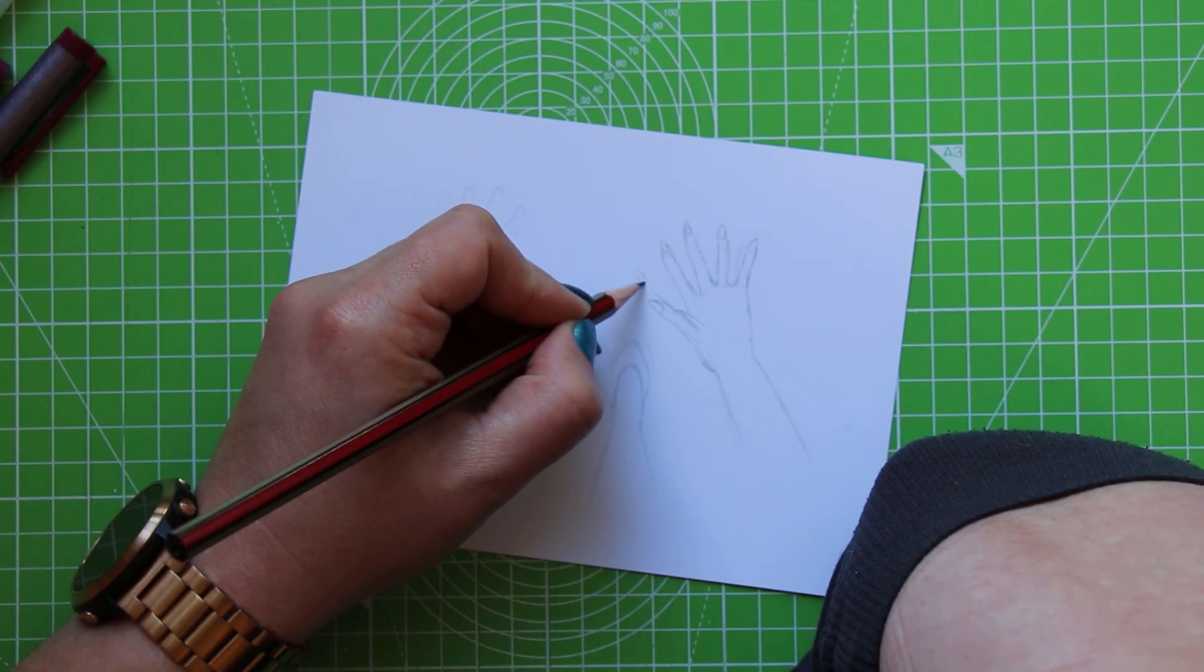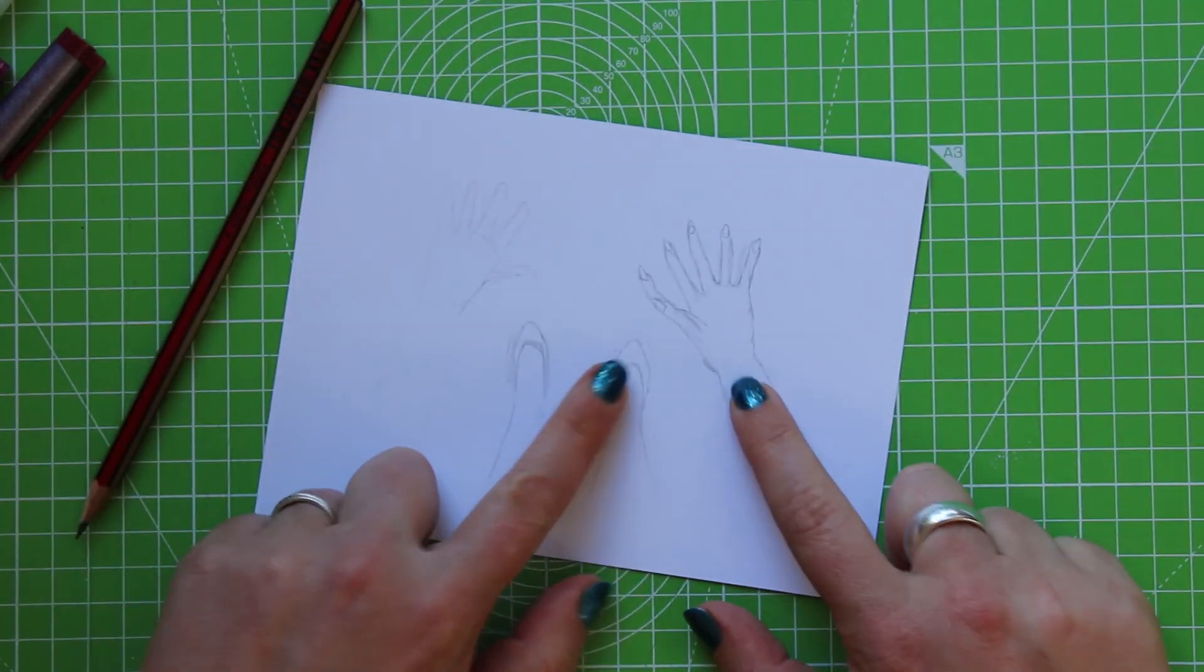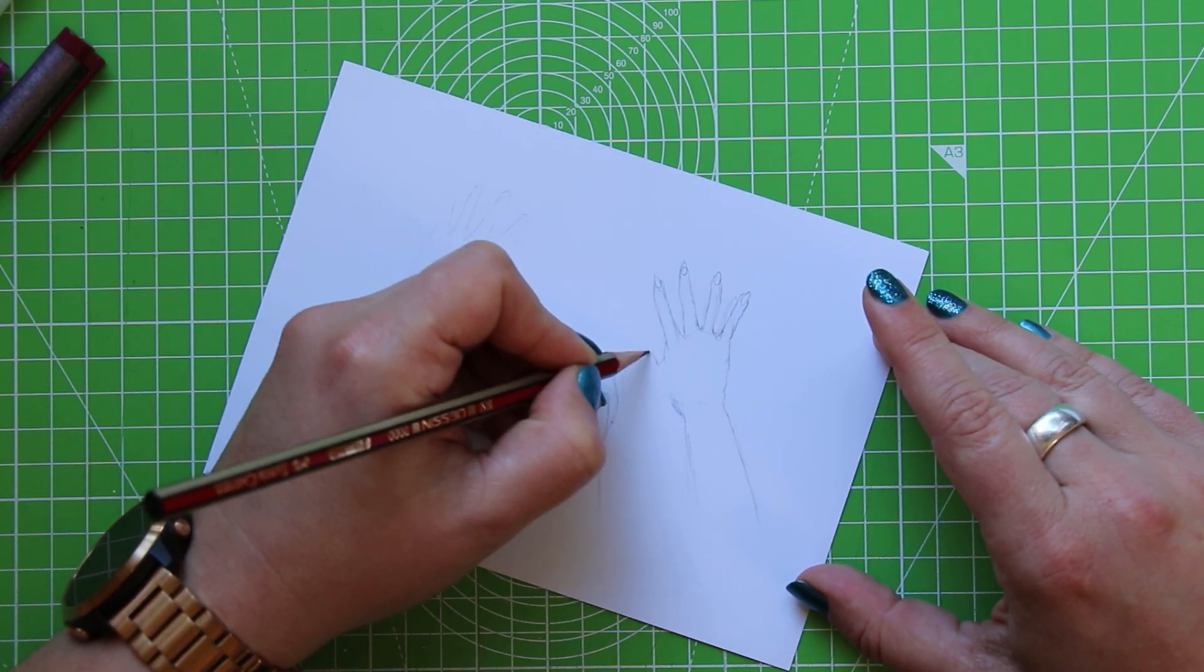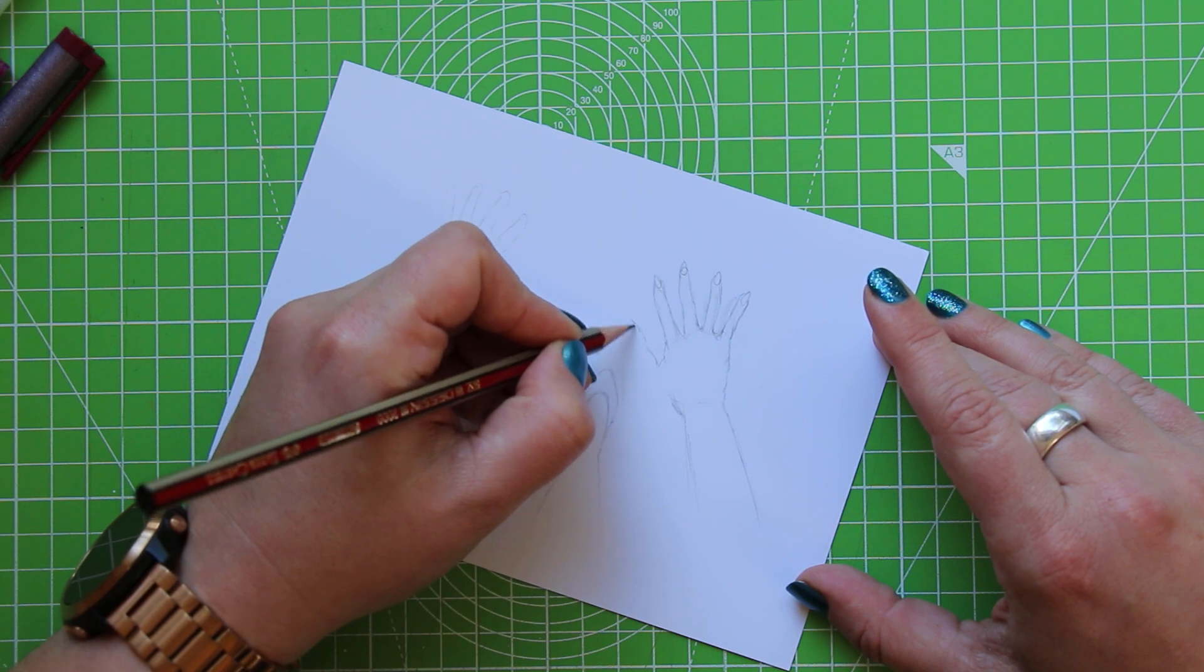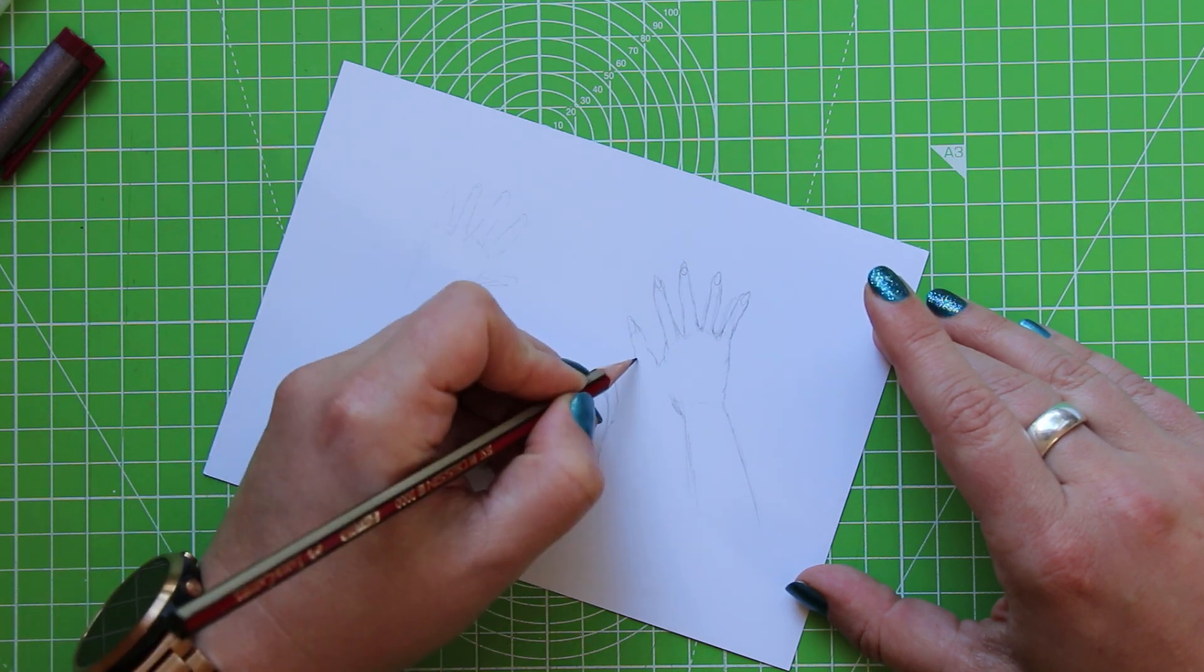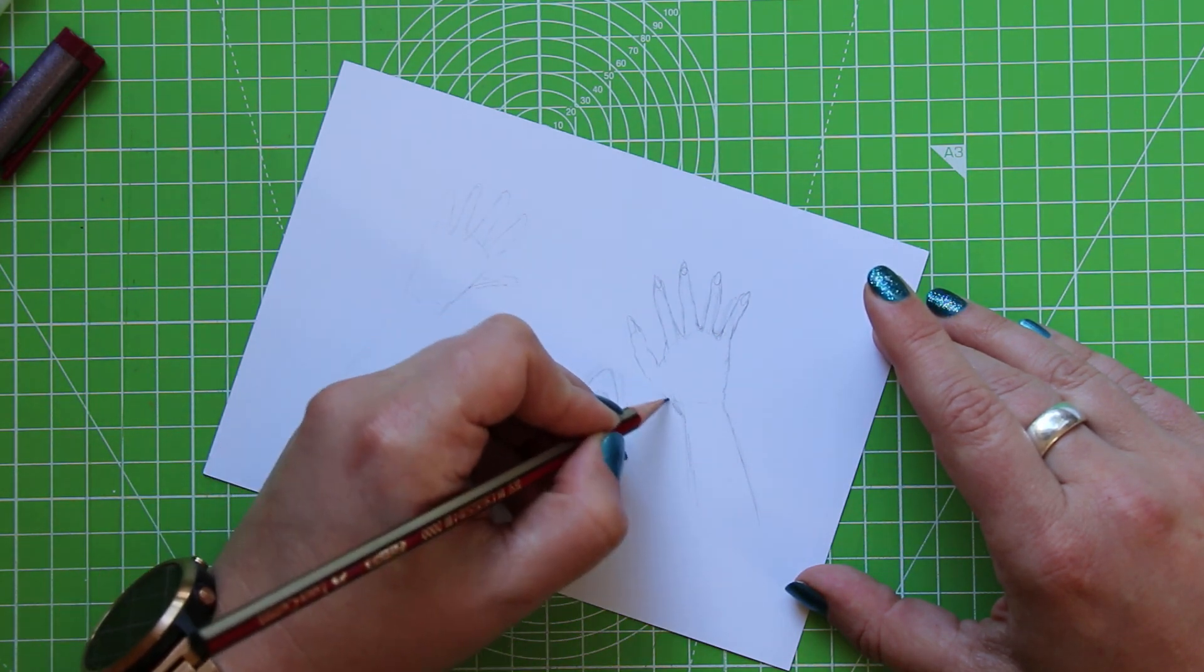I haven't done a lot of anatomy studies and I think it definitely shows, so I was playing about with the thumb position there and I ended up with like a big weird alien thumb, so I had to erase that and try again. The Lyra eraser is great, really enjoyed it.